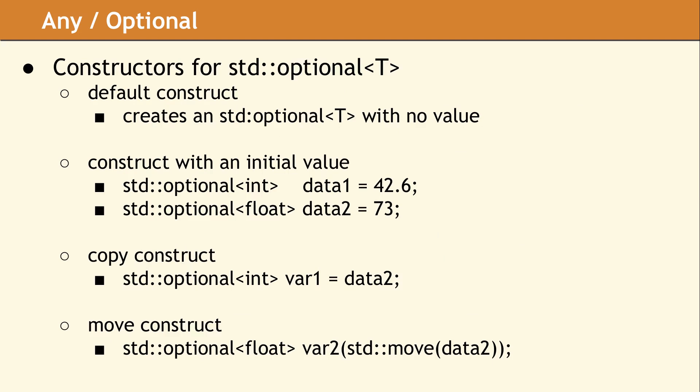There are several constructors for std::optional, and these are the most common. A default constructed optional variable has no value. An optional value can also be constructed with an initial value as shown in Data1 and Data2.